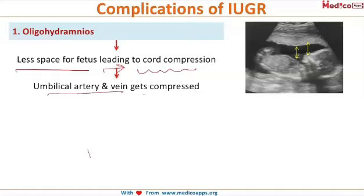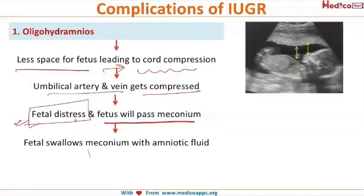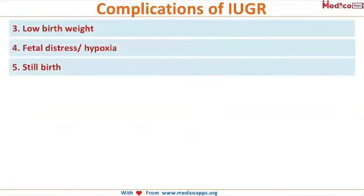The umbilical vein and umbilical artery are getting compressed, leading to fetal distress. In conditions of fetal distress, the fetus will pass meconium in utero, and as the fetus swallows the amniotic fluid along with the meconium, this will lead to meconium aspiration syndrome and a whole lot of associated problems.